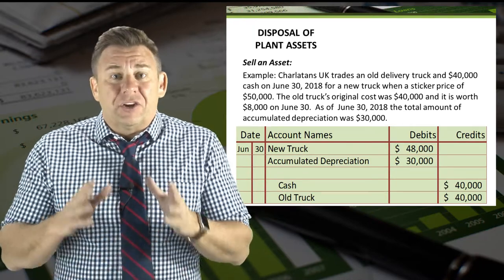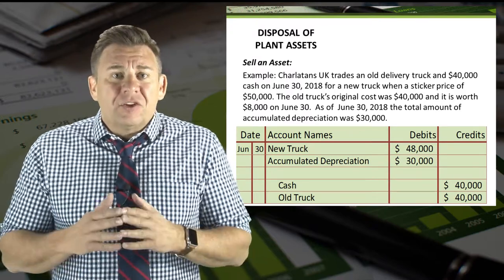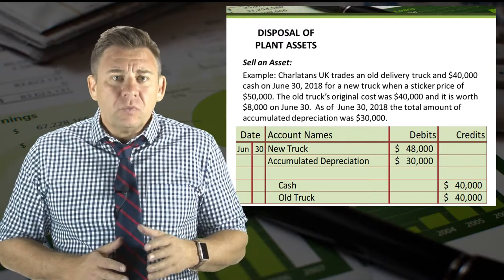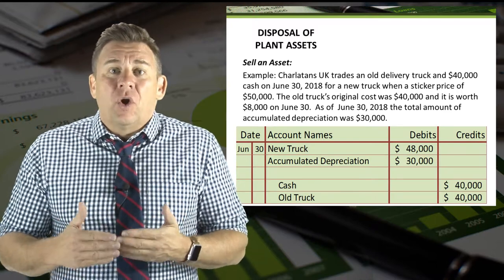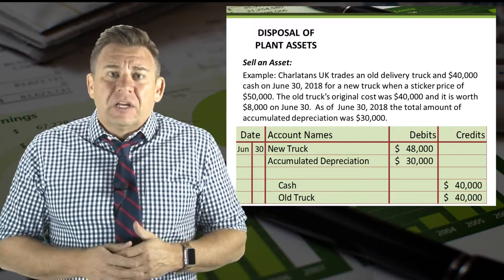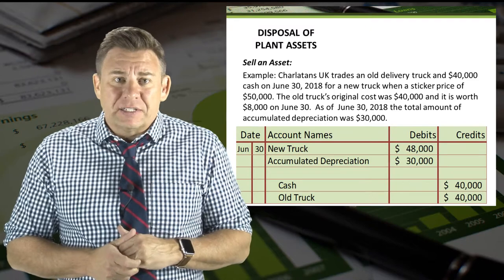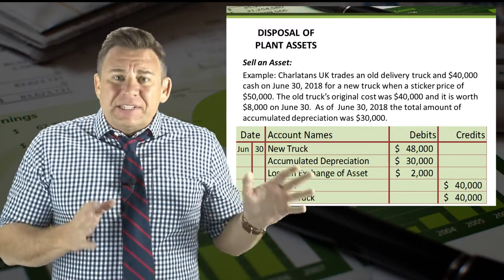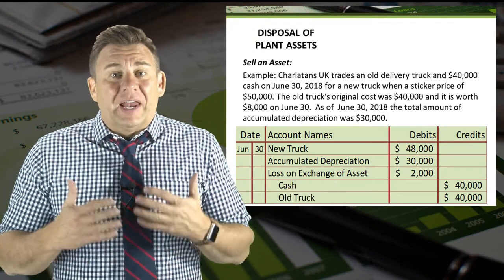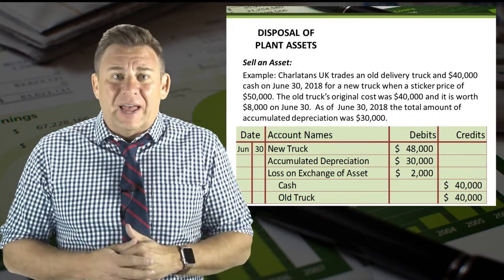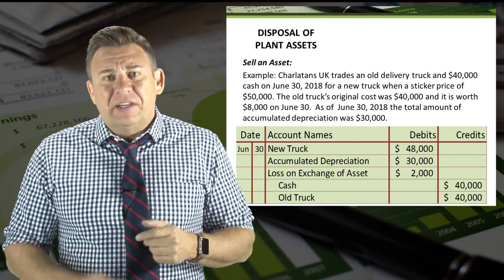We also need to credit Truck — the old truck — for its balance of $40,000. This will remove the old truck from our books. We also need to credit Cash for $40,000, as this is the amount we paid for the new truck. This journal entry doesn't balance; we need a debit for $2,000 to make it balance. In this case, we incurred a loss of $2,000 when exchanging assets. Losses are like expenses — they have normal debit balances and they decrease net income.